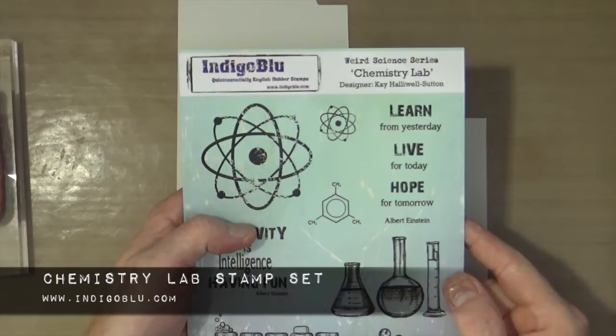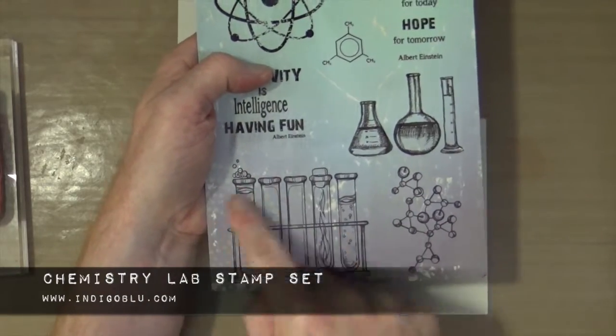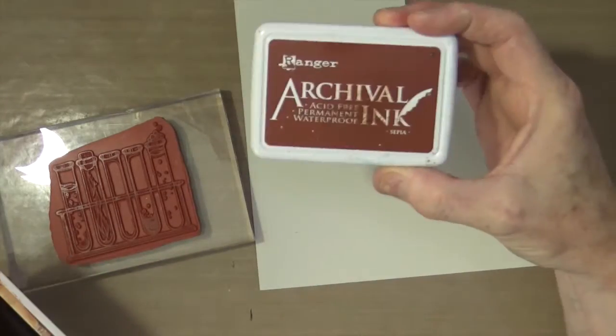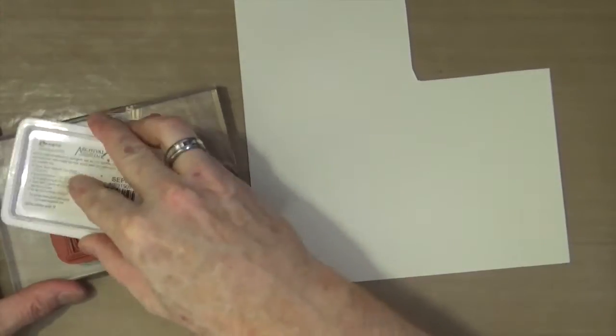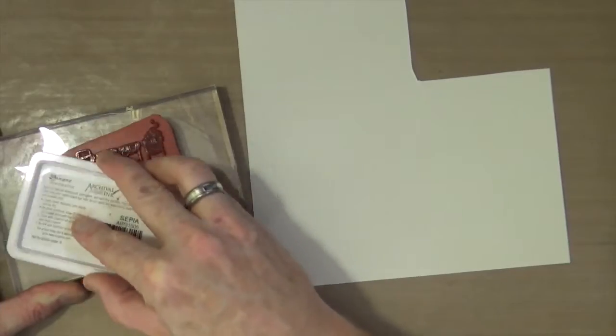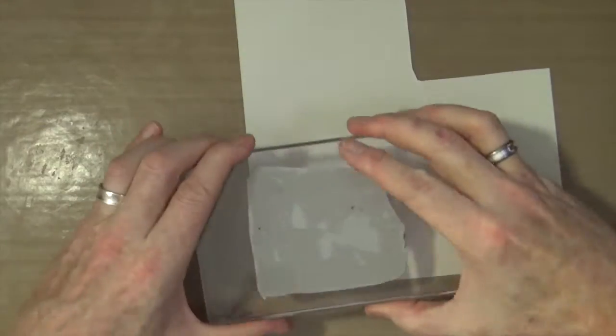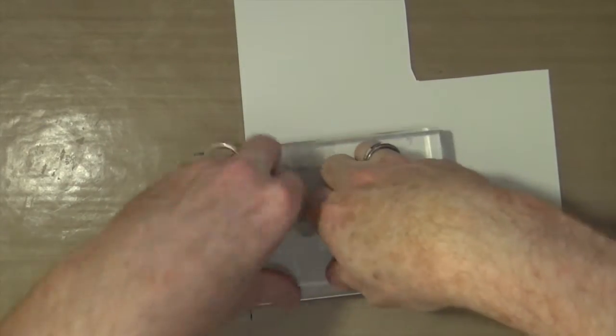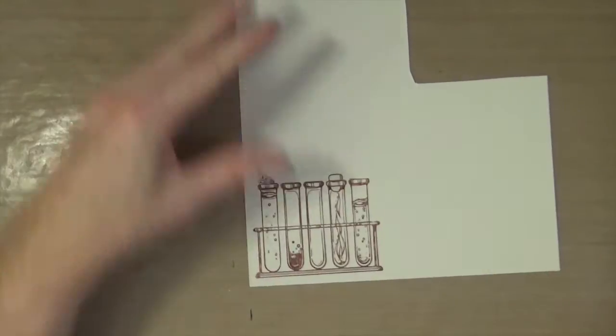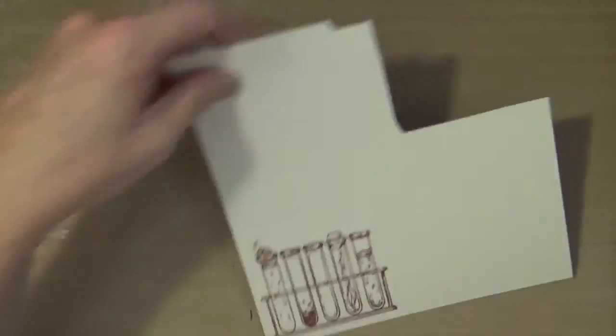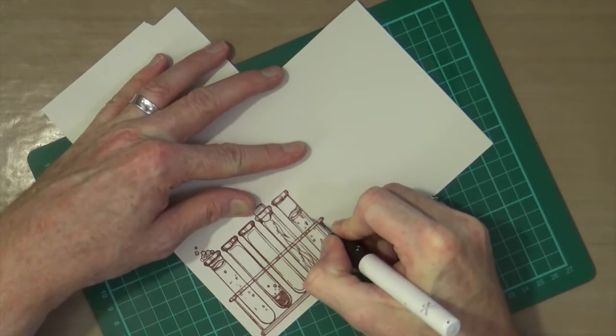For my next embellishment, I'm using the test tube elements from the Chemistry Lab stamp set, again from Indigo Blue. Using the same sepia ink to maintain continuity throughout the project, I'm stamping onto the same card I used for the owl. Again, I'm cutting it out with my craft knife.